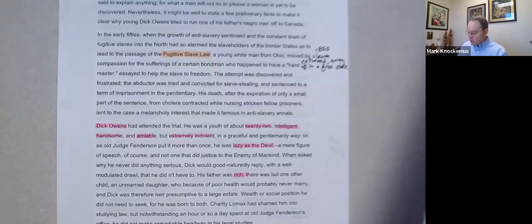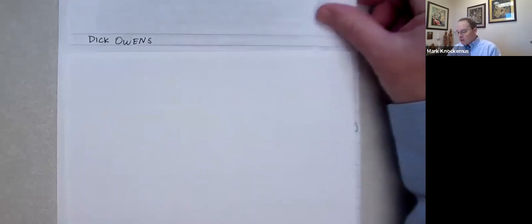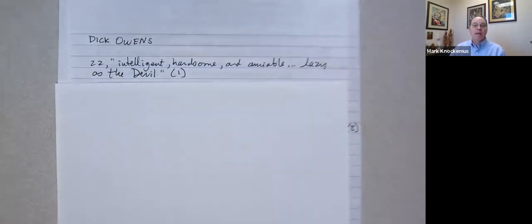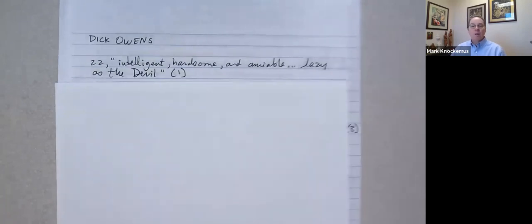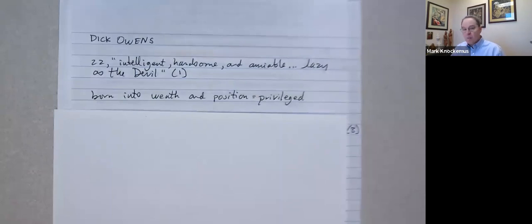One of those is Dick Owens. So we start to learn here more about Dick Owens. He's cited as being young in his 20s. I have a quote here: intelligent, handsome, and amiable. In other words, friendly, but also lazy as the devil. And I've gone ahead and I've cited where that quote comes from in case later I want to go in and use this when I'm writing a paper, when I'm writing an essay. Something to always think about.